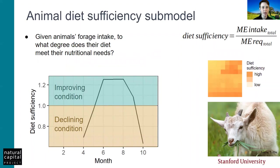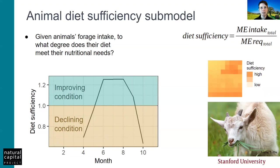After the model predicts what animals would eat, we compare the nutritive content of that diet to the animal's nutritional needs using a simplified metric called diet sufficiency. Diet sufficiency is simply the ratio of the intake of metabolizable energy to the animal's requirement for metabolizable energy in that time step. Because it's a ratio, it varies around one. If diet sufficiency is lower than one, it indicates animals are not meeting their nutritional needs and their condition may be declining. If diet sufficiency is one or greater, it indicates the diet is sufficient and we can expect animal condition is improving.